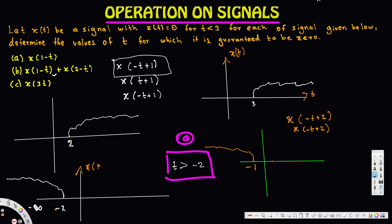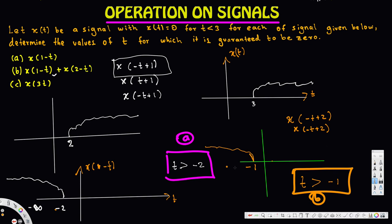x(1-t) starts at -2 and x(2-t) starts at -1. When we add these two together, the combined signal starts from -1 because that's the maximum of the two starting points. So the interval where the sum is guaranteed to be 0 is when t is greater than -1. To summarize: for part A, x(1-t) is 0 when t is greater than -2; for part B, x(1-t) + x(2-t) is 0 when t is greater than -1.